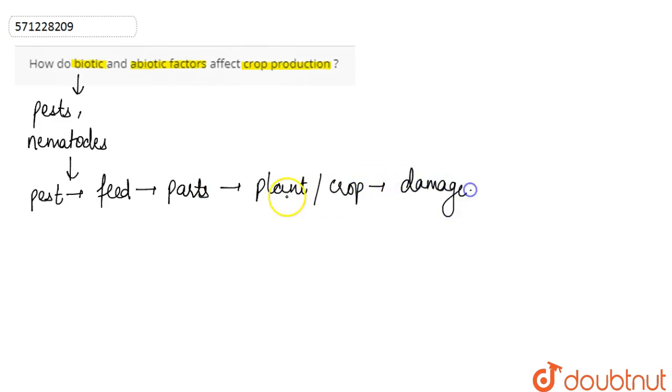If we consider an example of pests, the boll weevil is a pest on cotton. It attacks the cotton crop and reduces its yield.